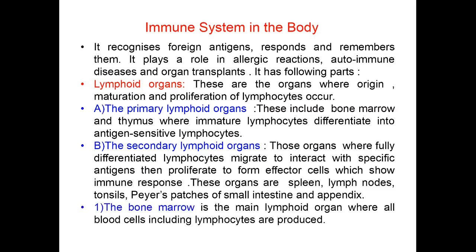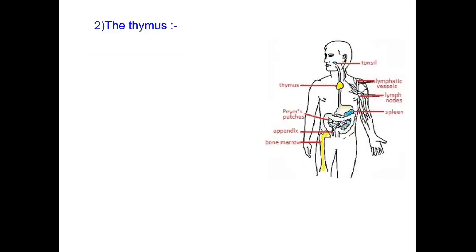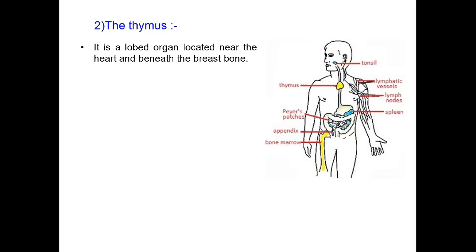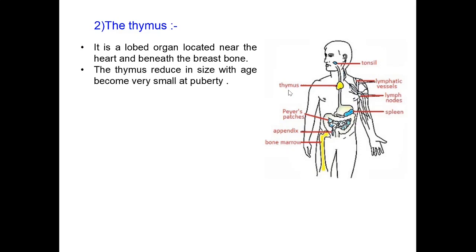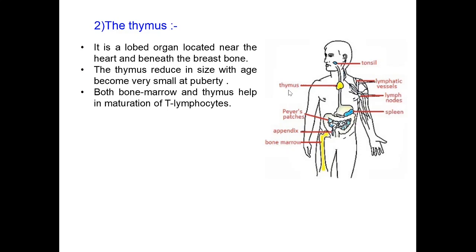The bone marrow is the main lymphoid organ where all blood cells including lymphocytes are formed. The thymus is a lobed organ located near the heart and beneath the breast bone. The thymus reduces in size with age and becomes very small at puberty. Both bone marrow and thymus help in the maturation of T lymphocytes.